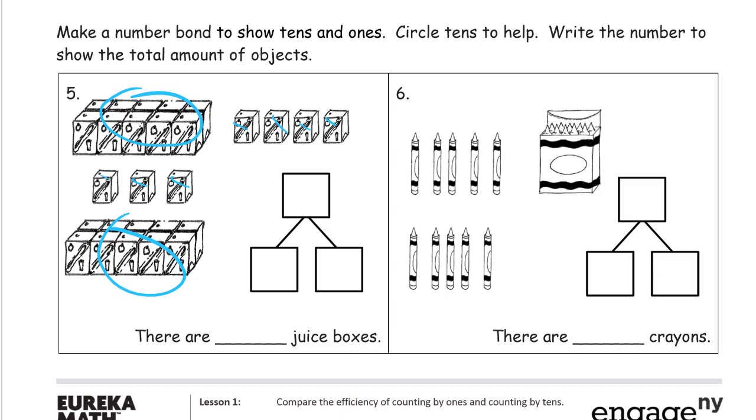So seven ones and twenty in tens is twenty-seven. There are twenty-seven juice boxes.